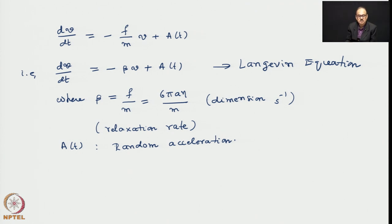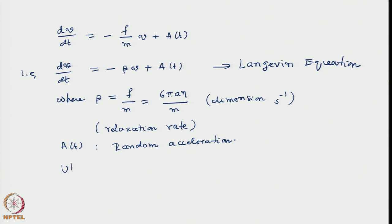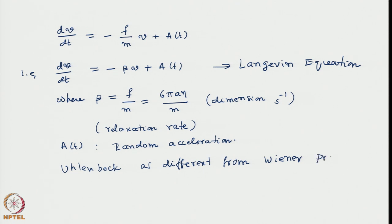The former process — the random walk that we discussed in previous lectures — was called the Wiener process because it is a coarse-grained model where the particle instantly takes a jump. The model we are building based on Langevin's equation is different from the Wiener process. Langevin went one step further. He postulated that the random acceleration, about which we know very little since molecular dynamics is a very complex subject, nonetheless has some broad general properties that can be extracted.